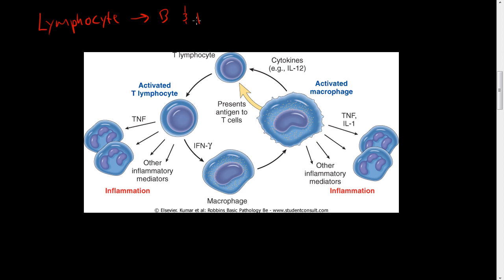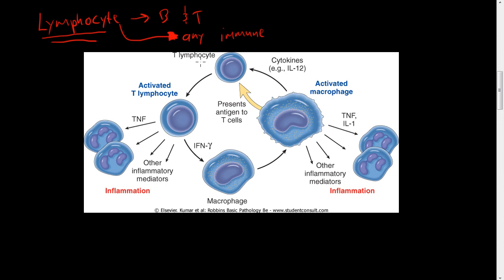Now let's talk about lymphocytes — there are two kinds: B and T lymphocytes. In this picture we're going to focus on T-lymphocytes. These lymphocytes respond to any immune stimulus — anything that's foreign or that the body recognizes as foreign. They are one of the major cell types of the immune system. The T-lymphocyte circulates in our blood and undergoes the same process as neutrophils and monocytes.